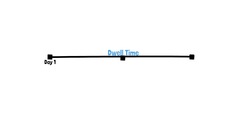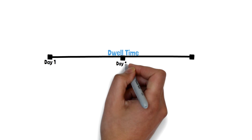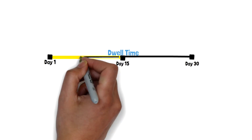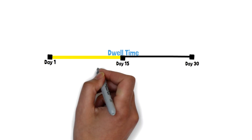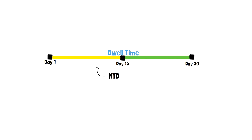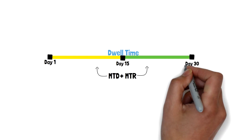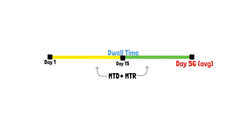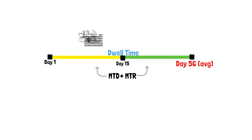Dwell time refers to the length of time an attacker is able to roam free on your network without being detected. It's a number calculated by adding the mean time of detection with the mean time of repair. According to FireEye, the average global dwell time in 2020 was 56 days. That means that on average, an attacker had nearly two months inside a network before being cut off.